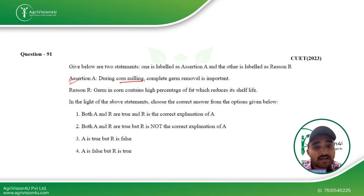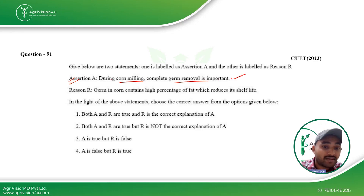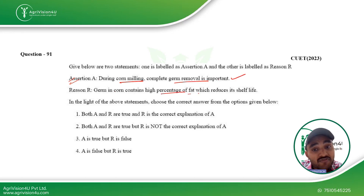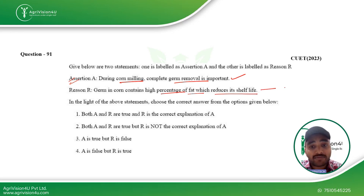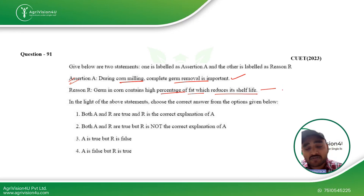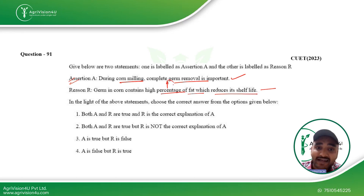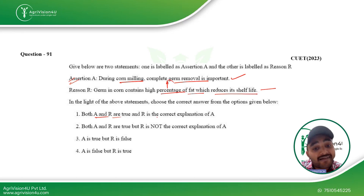The assertion is: during corn milling, complete germ removal is important — yes, that is true. The reason: germ in corn contains a high percentage of fat, which reduces shelf life because it makes the product more prone to oxidative changes due to the high amount of fat. This explains it correctly, so both assertion and reason are true and the reason is the correct explanation.